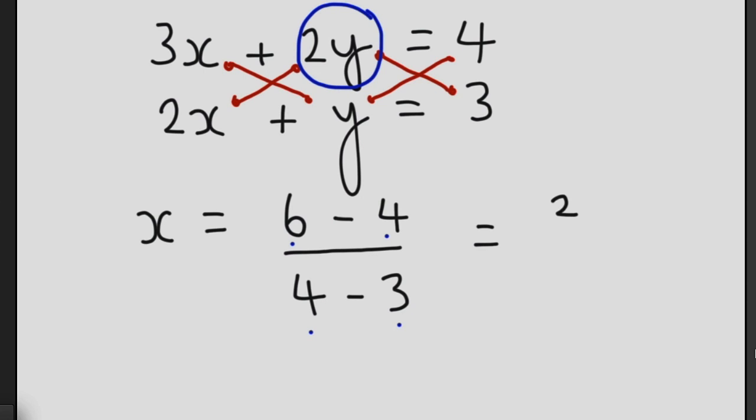So 6 subtract 4 gives us 2, divided by 4 subtract 1 is 2. 2 divided by 1 is 2. So therefore, our final answer, we know that x is equal to 2.